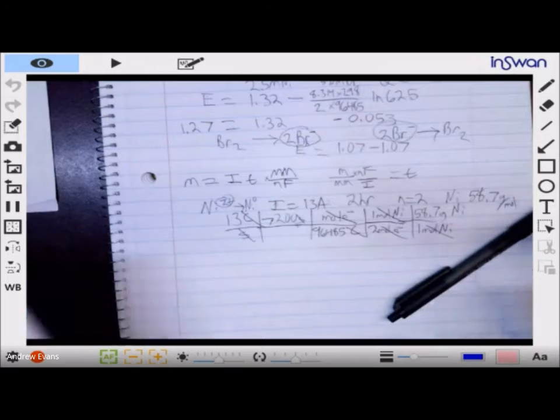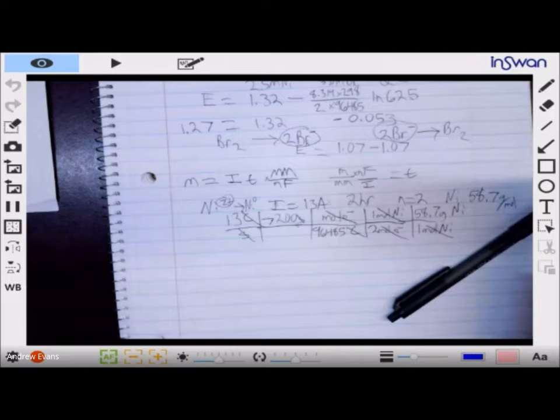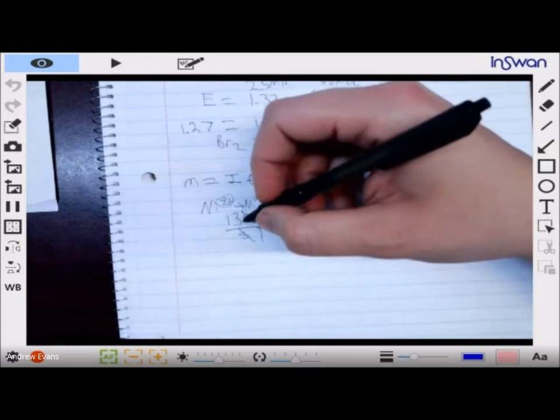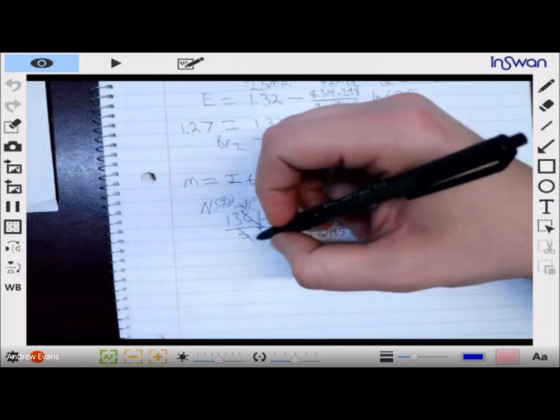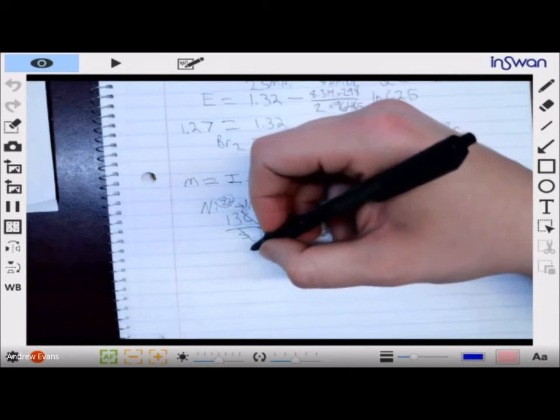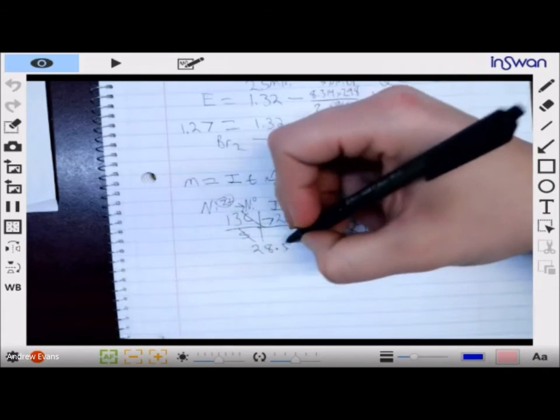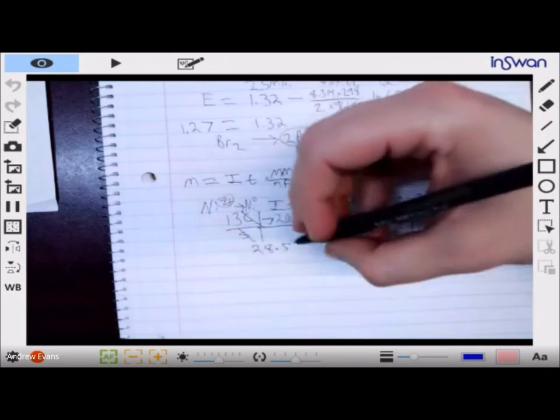So, our equation is derived from that. So, 13 times 7,200 divided by our N, divided by our F, and multiplied by our molar mass. How much nickel could be electroplated in two hours at a current of 13 coulombs per second would get 28.5 grams.